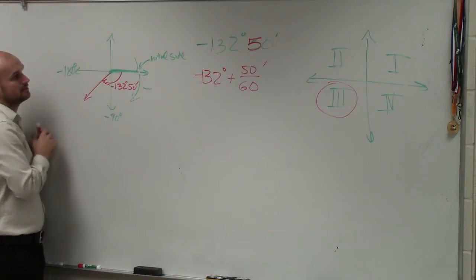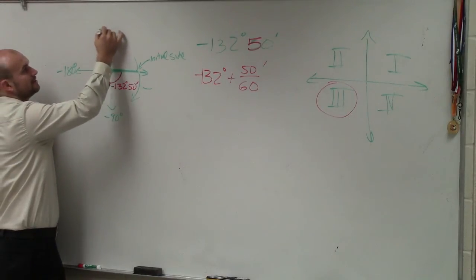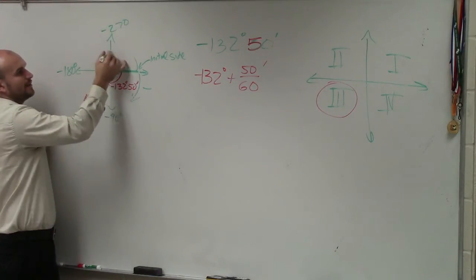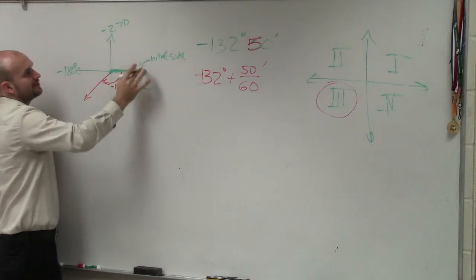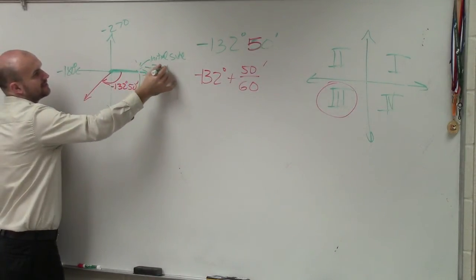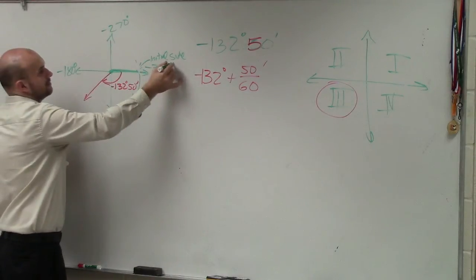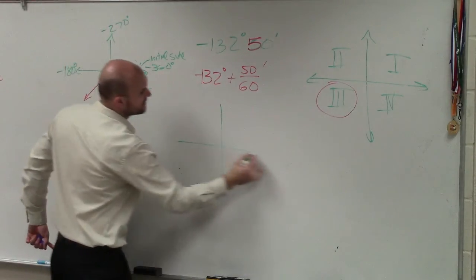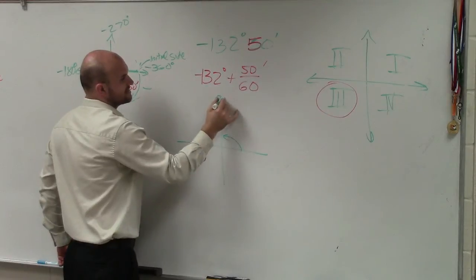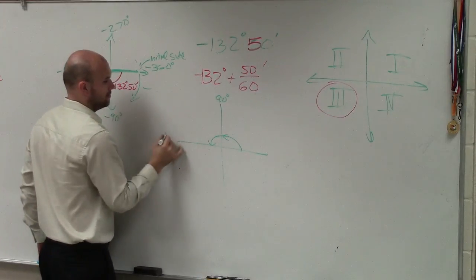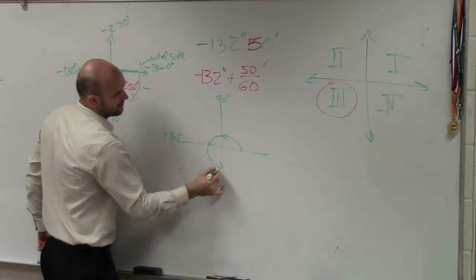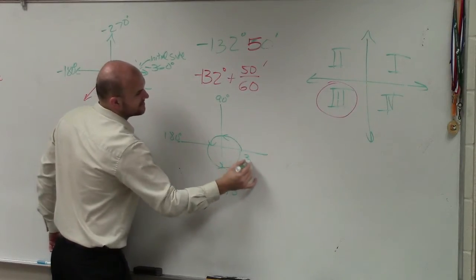What would be here? Oh, this would be negative 270. If you went all the way around the circle, it would be negative 360. And is it different if you went positive? Yeah, if you went positive, then it would go like this. That's 90, 180, 270, 360.